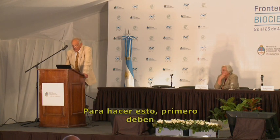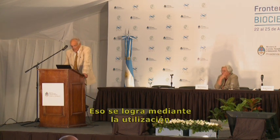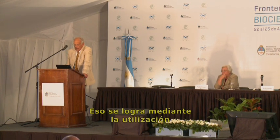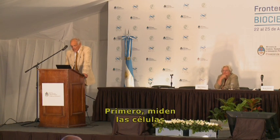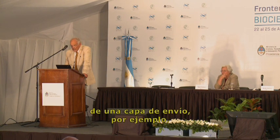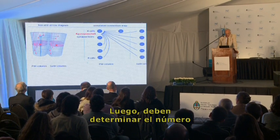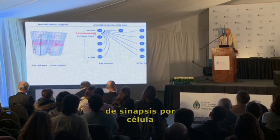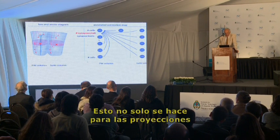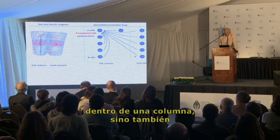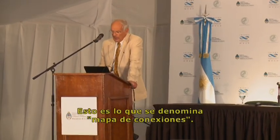To do this, you first have to look at the innervation of layer 2. Using an annotated connection map, we want to first measure the cells in a sending layer — for example, layer 5B or layer 4 — then measure the number of receiving cells, determine the number of synapses per cell, and also determine the synapse location. This is done not only for projections within the column, but also from the first surround column. This is what we call an annotated connection map.